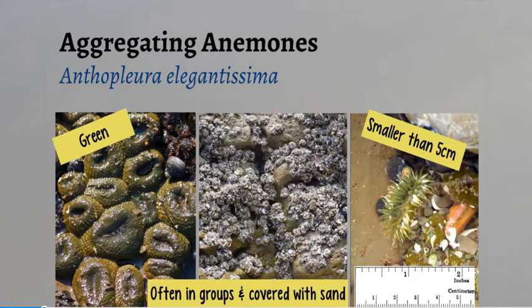Aggregating anemones can be a little tricky to identify because many times we mis-ID them for juvenile giant green or sunburst anemones. However, these anemones are much smaller and are usually only 5 centimeters in diameter or smaller. They often cover themselves with small shells and sand and can form dense aggregations, giving them their name.